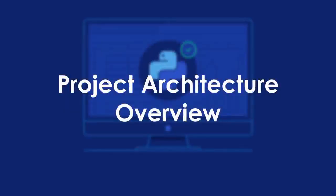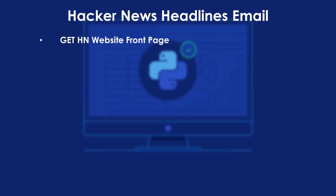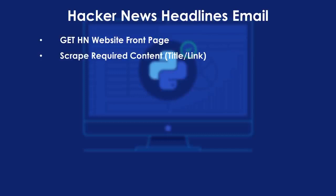In this video, we'll learn about the project architecture of building an automated Hacker News Headlines emailer. The architecture starts with getting the content of the Hacker News website front page. We'll use the Python package requests to make a GET request to extract the content of the website. Once we have the content, we'll use the Python package Beautiful Soup to scrape the required content — components like title, link, score, domain name, etc.